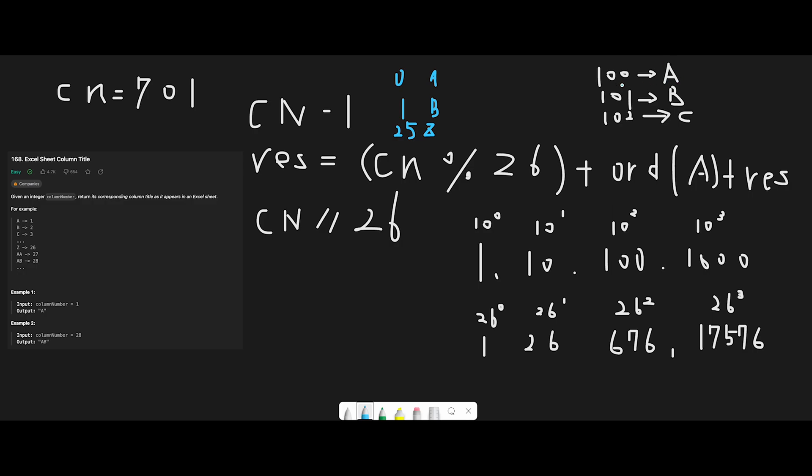If 100 is A, then 101 should be B, 102 is C, and 103 should be D, right? So if we add ASCII number of A to modulo, we can get the correct ASCII number of some character. That's why we need to add ASCII number of A here.